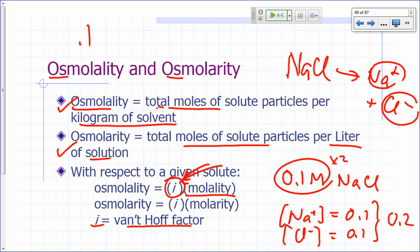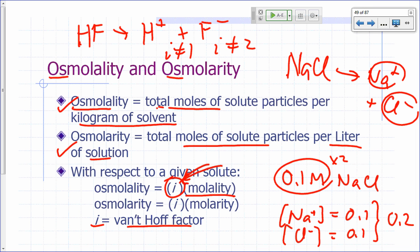What if you have something like HF, which only partially ionizes? The i is not going to be equal to 1, but i is not going to be equal to 2 either, because it's not going to be completely ionized. The value of i you get — your Van't Hoff factor — would be a number between 1 and 2, indicating to what extent HF ionizes in water.